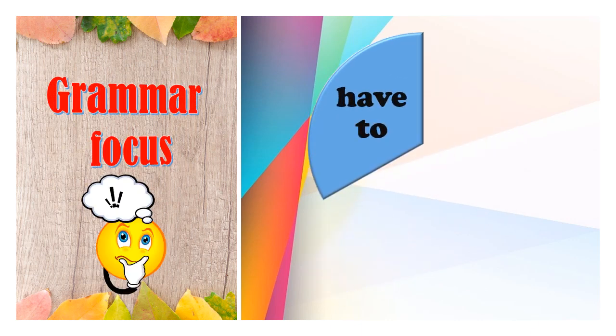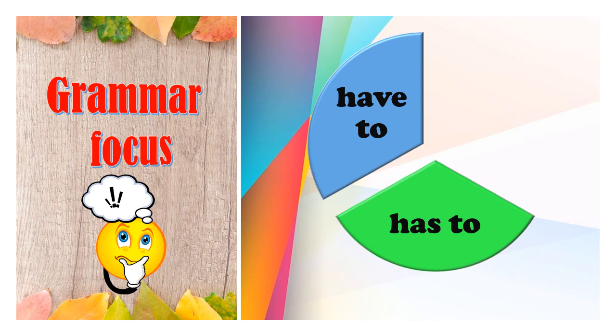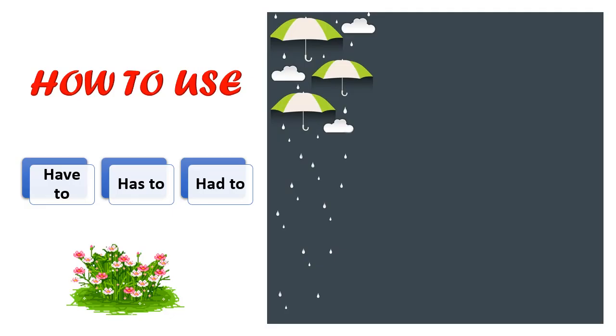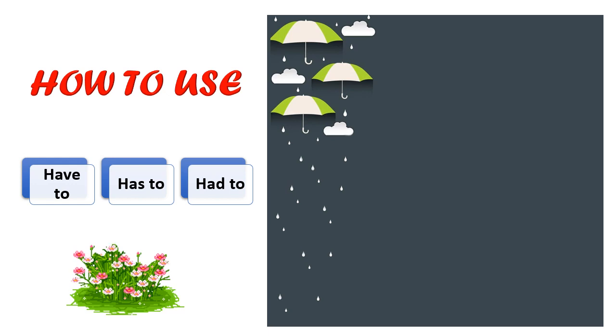We will learn about have to, has to, and had to. Now let's learn to know how to use have to, has to, and had to. First one, you use it to show that you must do something. It means that we use these things to do something.